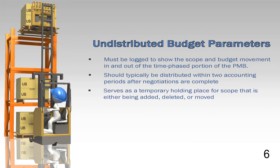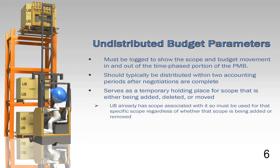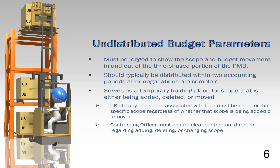The next parameter involves the time limit for allowing scope and budget to reside in the UB before being distributed. The reason for allocating budgets after contractual award or a contractual change, typically within two accounting periods, is to limit the period for which a time-phased PMB does not exist. Therefore, it is in everyone's best interests to get the work scope and budget out of UB and into the time-phased portion of the PMB. There may be exceptions to the general practice of two accounting periods, subject to discussions between the contractor's project manager and the federal project director. An example may include a massive restructuring effort. In such cases, documentation should be maintained and provided to explain the circumstances for compliance purposes.